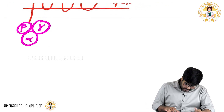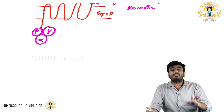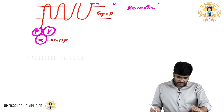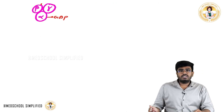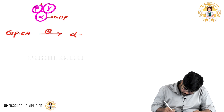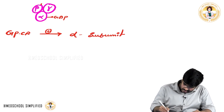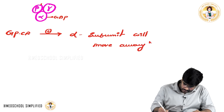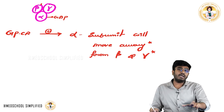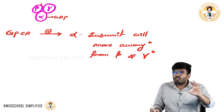An important point: the alpha subunit, whenever the receptor is not active, is bound to GDP. Whenever the GPCR is activated, the alpha subunit will move away from beta and gamma. Whenever you stimulate this receptor, the alpha subunit detaches and moves away.